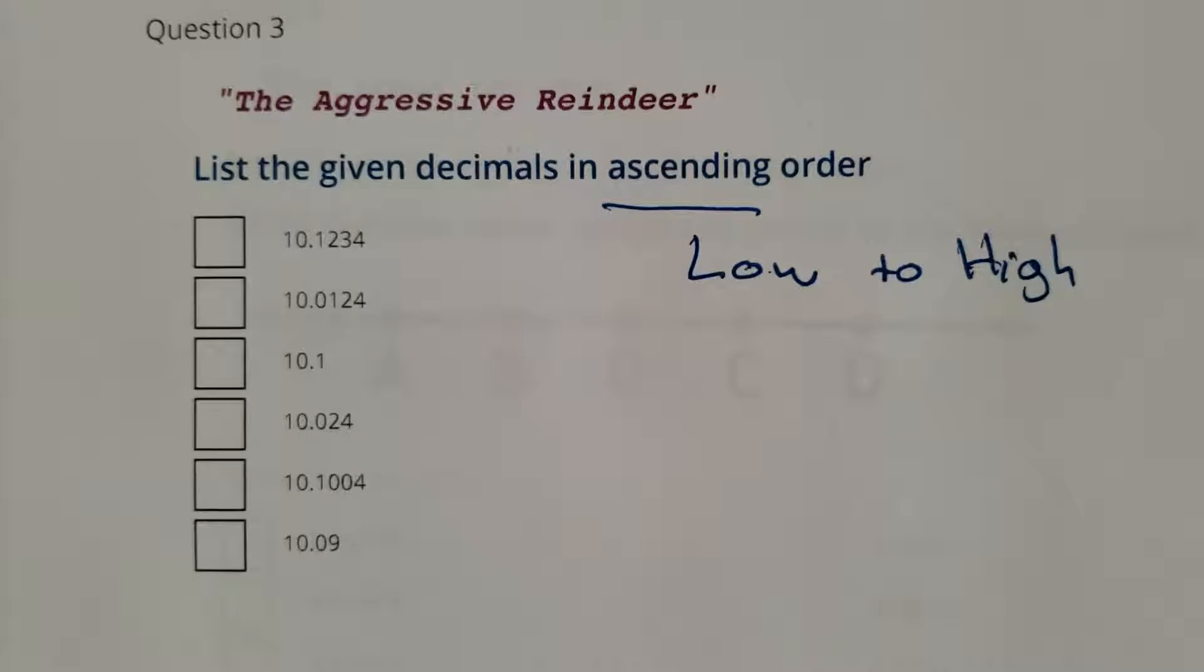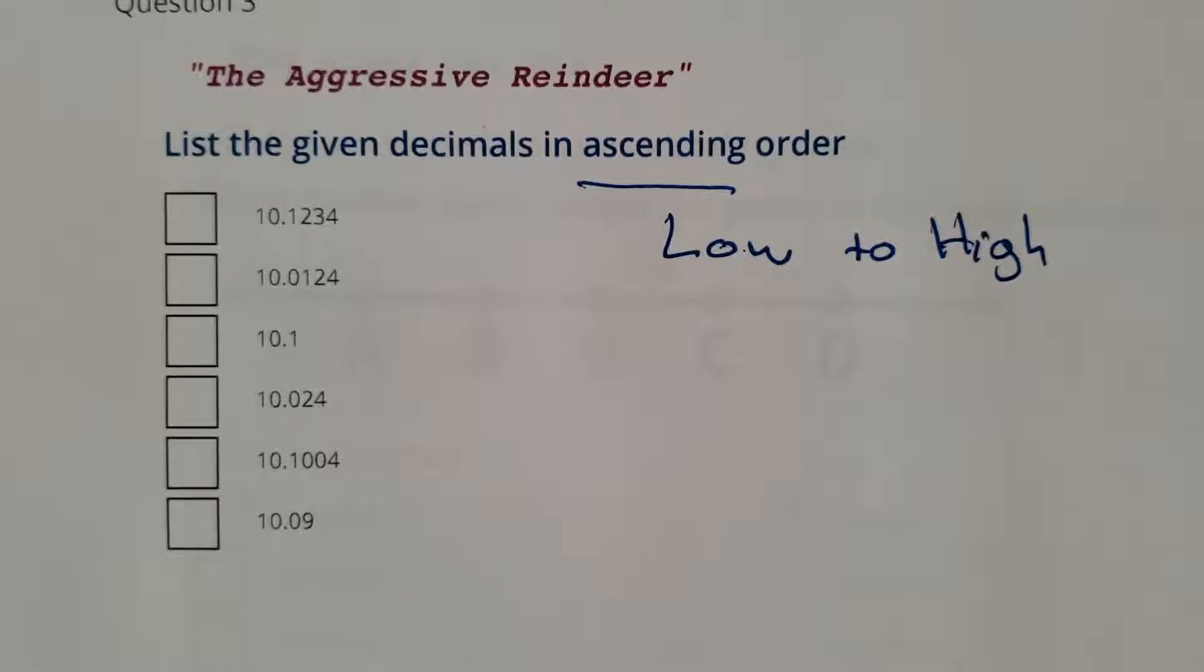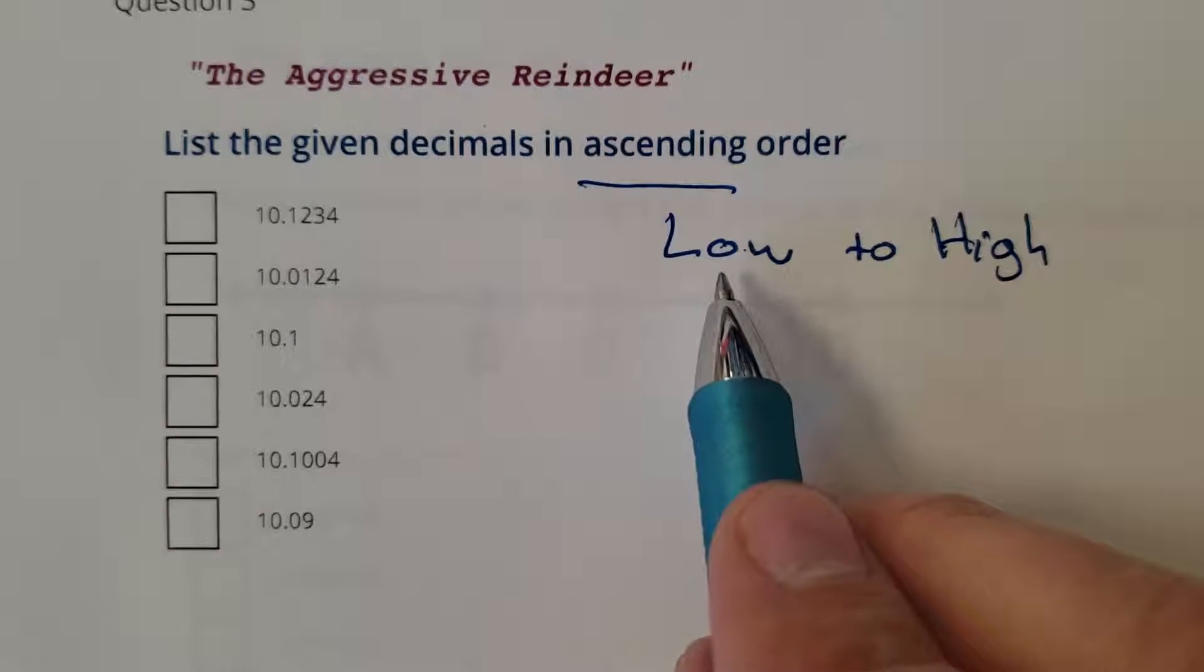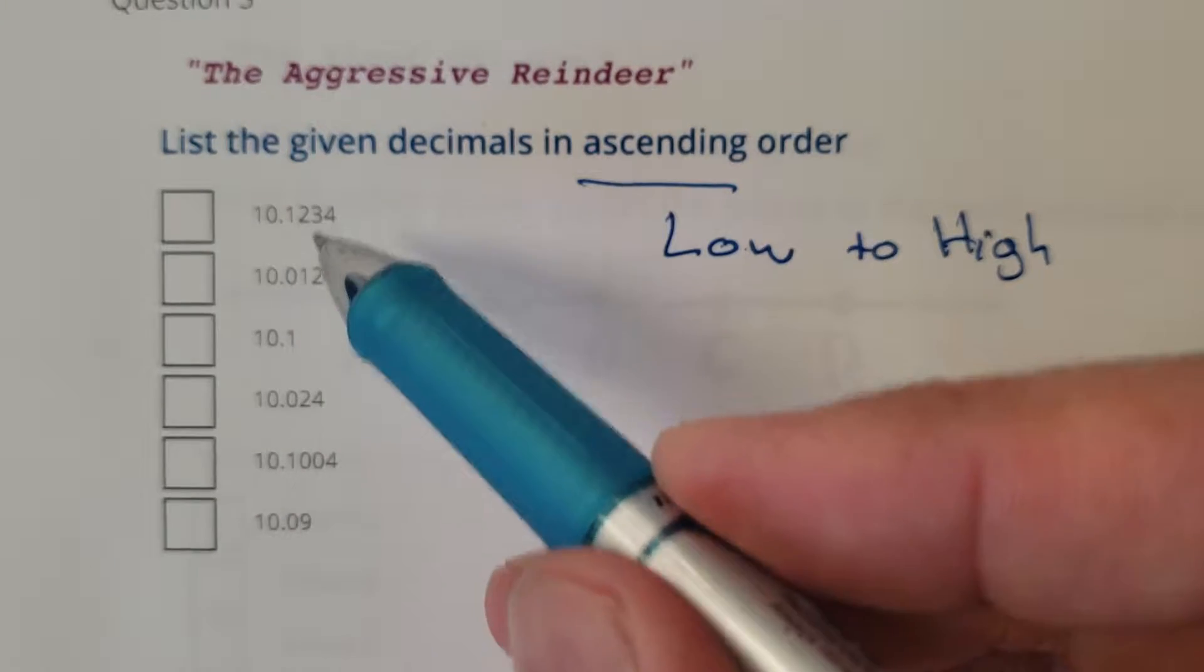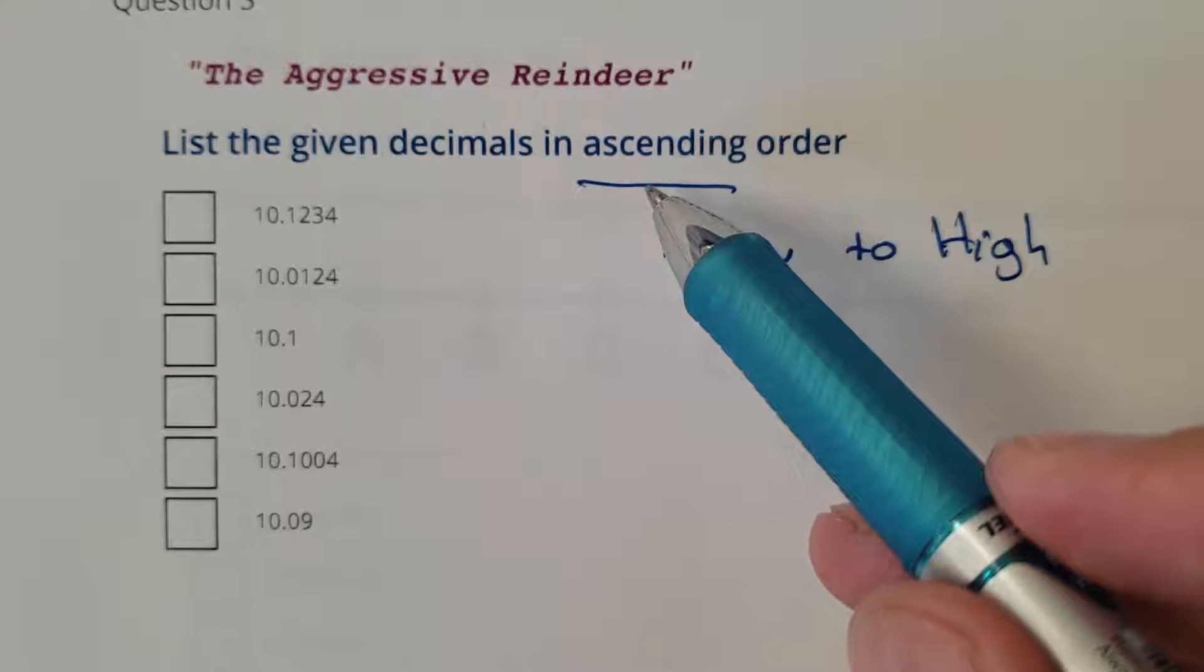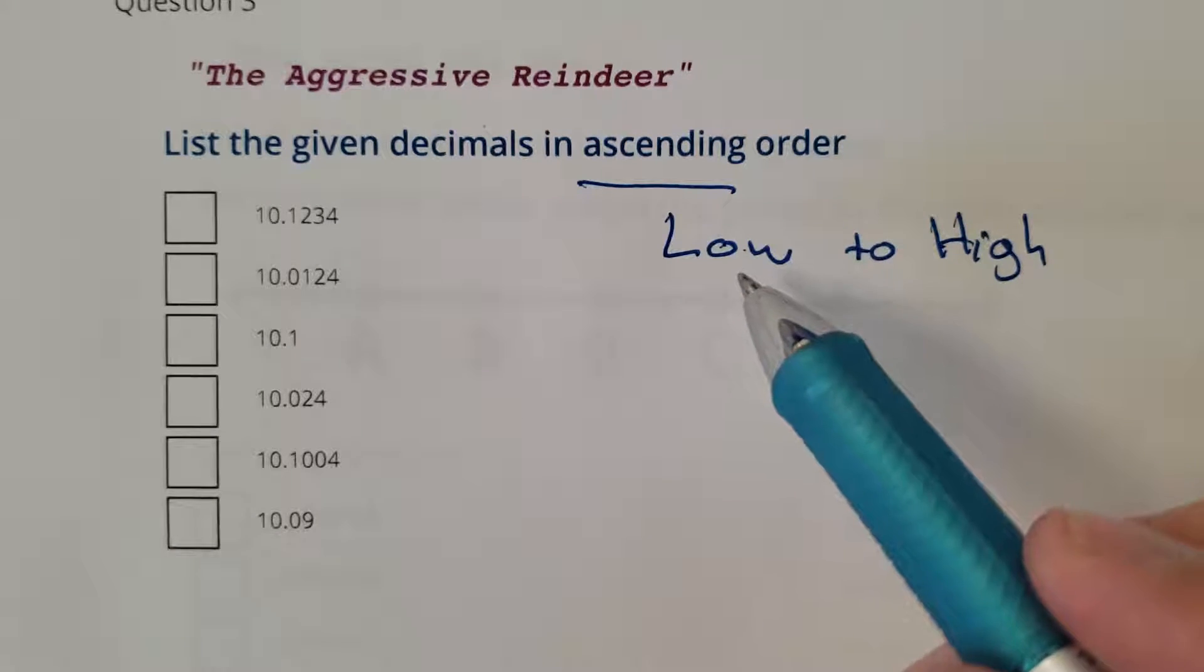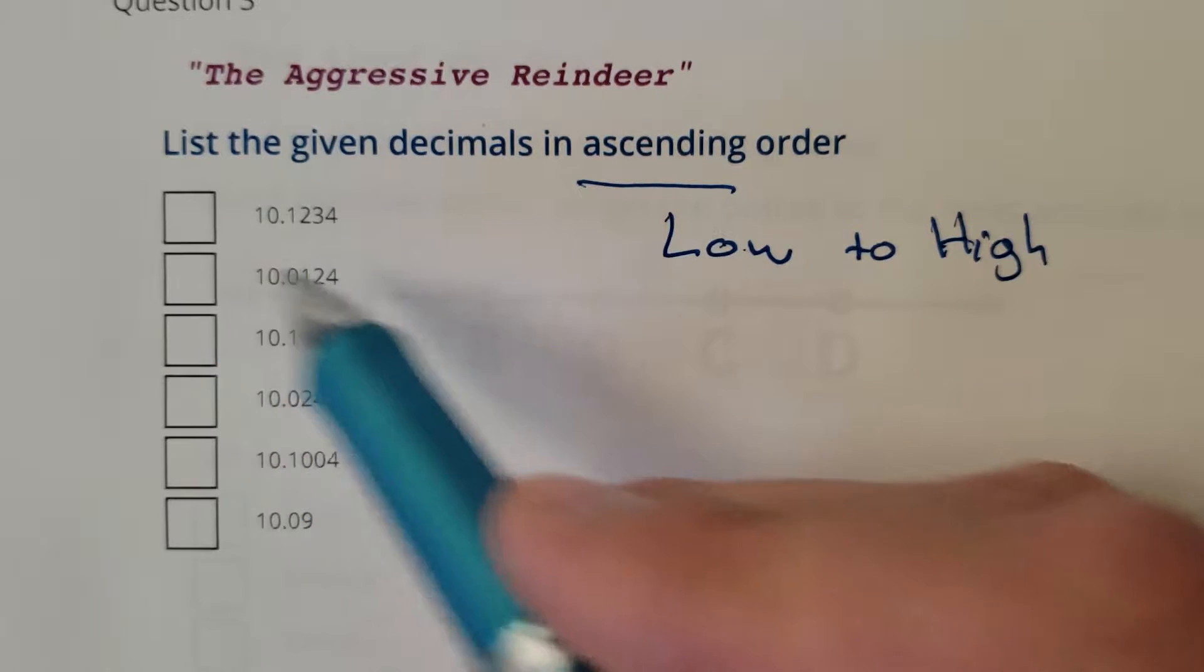Hello students, let's go over the Aggressive Reindeer. We're going to list the given decimals in ascending order. That means you want to put the lowest one first to the highest one. That doesn't mean you take the lowest number and put it on the bottom. Ascending order means you need to list them lowest first.